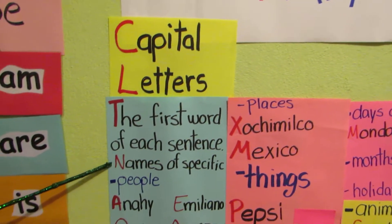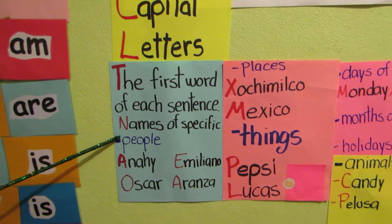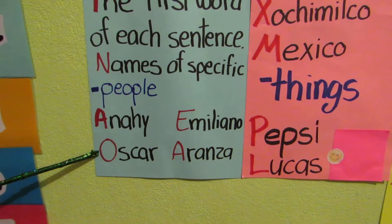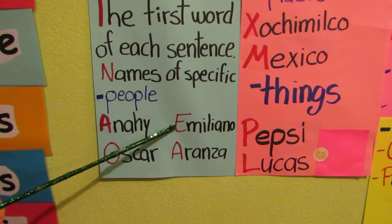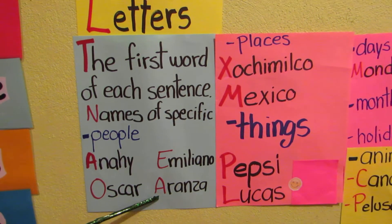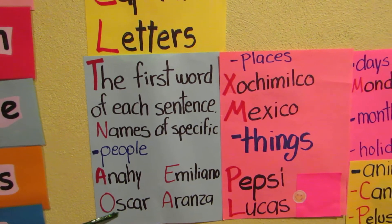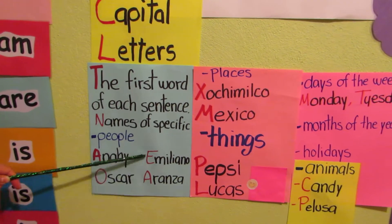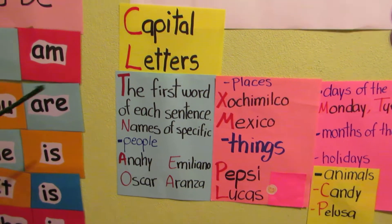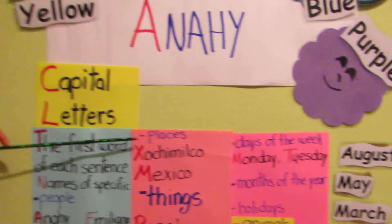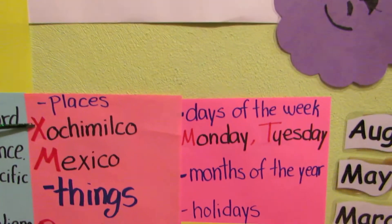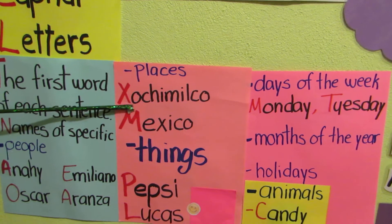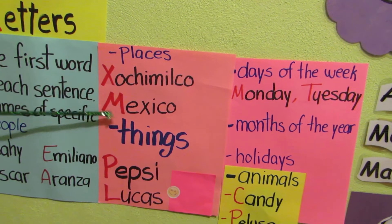Names of specific people, for example, Anaí, Oscar, Emiliano, Aranza — pay attention, you see, they begin with capital letters. Places, for example, Xochimilco or Mexico, you see, begin with capital letters.